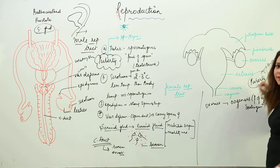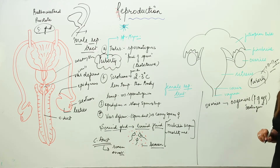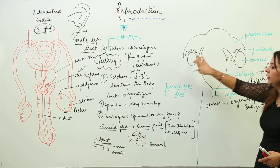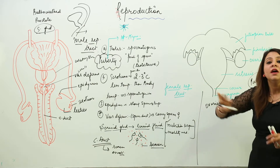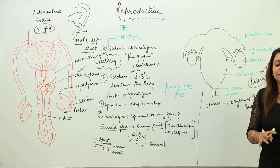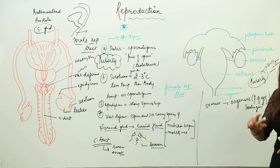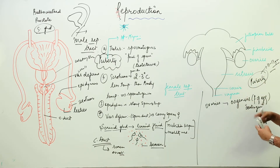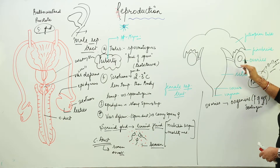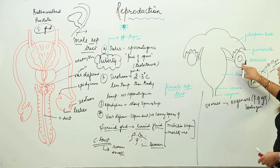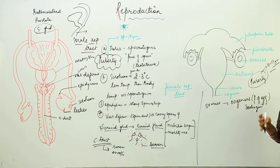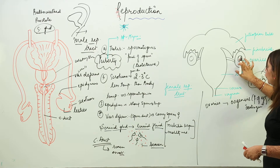Many eggs are developing in each ovary, but only one egg matures. Maturation of an egg occurs from alternate ovaries — for example, in one month the egg matures from one ovary, and in the next month from the other ovary.